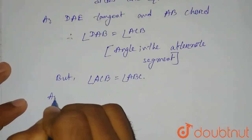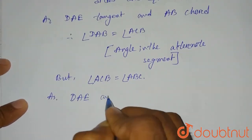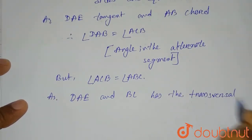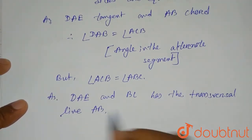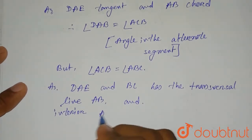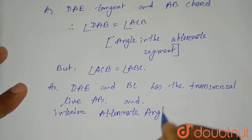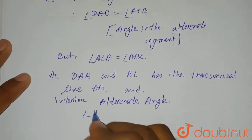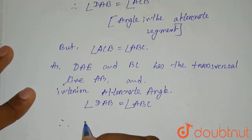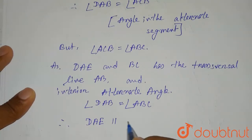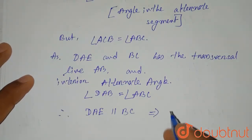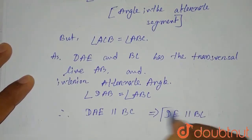Since DAE and BC have AB as the transversal, and the interior alternate angles — angle DAB equals angle ABC — are equal, we can say therefore DAE is parallel to BC. Since A lies in the middle of line DE, we can simply say that DE is parallel to BC. This is what we had to prove.